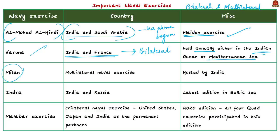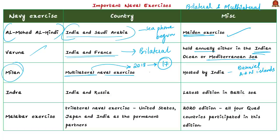The Milan exercise is a multilateral naval exercise — a biennial exercise hosted by the Indian Navy under the aegis of the Andaman and Nicobar Command, held at the Andaman and Nicobar Islands. In 2018, 17 foreign navies attended the Milan naval exercise. The 2020 edition got postponed due to the pandemic — it would have been the largest edition with almost 30 foreign navies expected to attend. The Indra exercise is a bilateral exercise between India and Russia — a joint biennial military exercise that started in 2003, aimed at boosting cooperation and interoperability between the Russian and Indian navies.